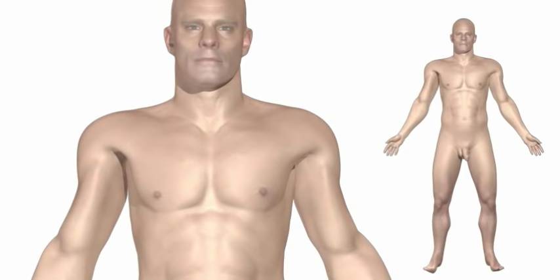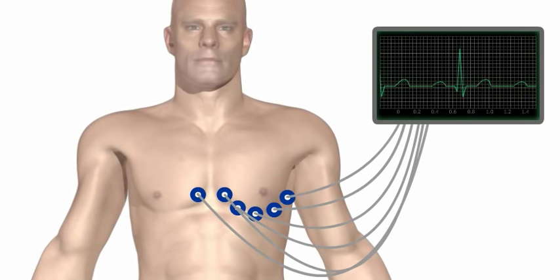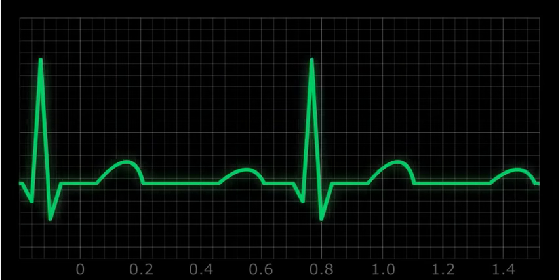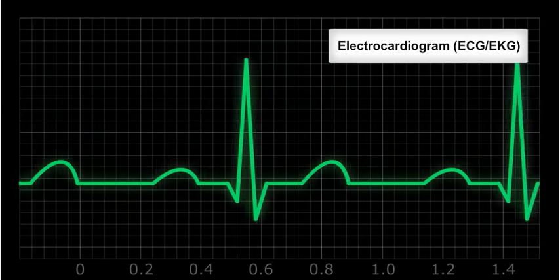This electrical activity can be measured at electrodes placed at specific points on the skin, from which a composite recording is produced in the form of a graph. This recording is known as an electrocardiogram, or ECG.